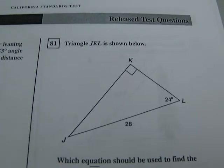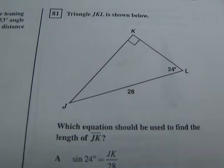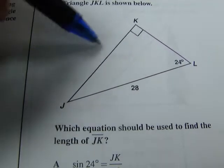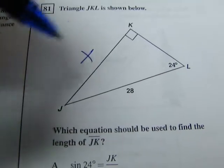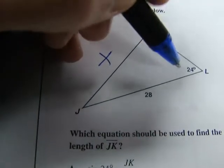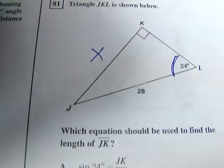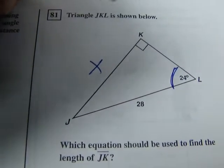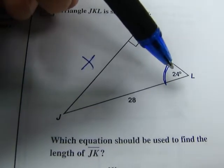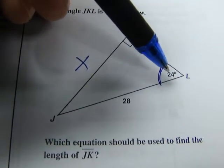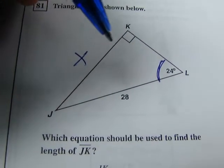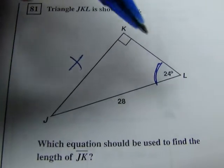Now 81. Triangle JKL is shown below. Which equation would be used to find the length of JK? So we want to know this. So I call this x. Clearly our angle of record is going to be this one. By the way you may have noticed this is certainly not a scale drawing. There's no way that's a 24 degree angle. So don't try to estimate by what it looks like.